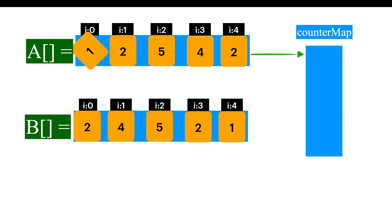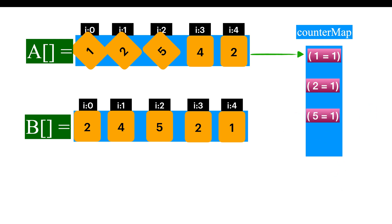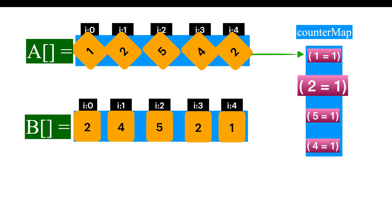So 1 is not present in hash map, so insert with counter 1. 2 is not present in hash map, so insert 2 with counter 1. And 5 and 4 are also not present in hash map, so just insert with counter 1. Now when it comes to 2 again, 2 is already present in hash map, so we will just increment the counter. So we maintain a hash map for the first array.